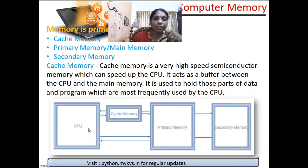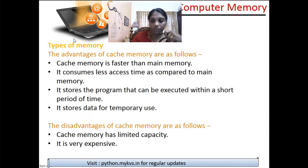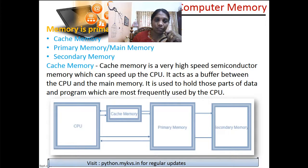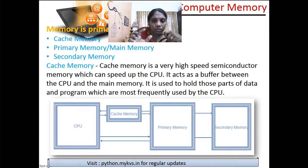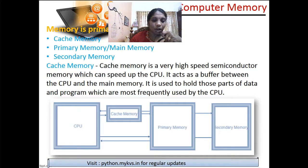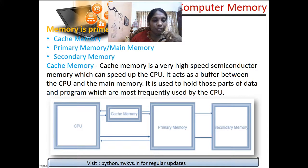Memory is primarily divided into different types: cache memory, primary memory — also called main memory — and secondary memory. Cache memory is a very special, very high-speed memory that is used to speed up and synchronize the high-speed CPU. It is costlier than main memory or disk memory, and it acts as a buffer between the CPU and the main memory.